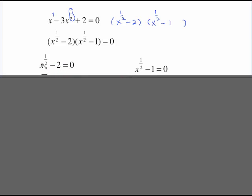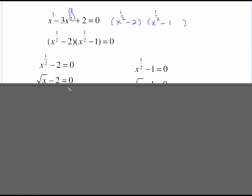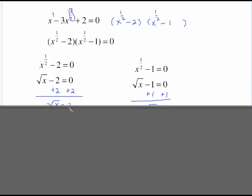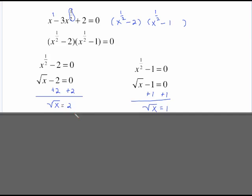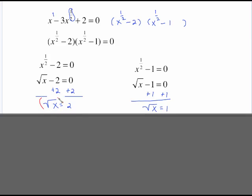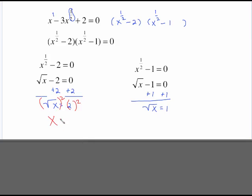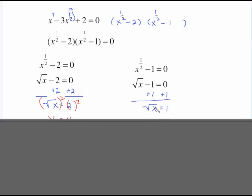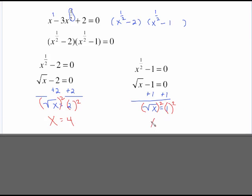I prefer to switch this rational exponent back to its radical form. X to the 1/2 converts to the square root of x, still minus 2 equals 0. I need to get this radical isolated, so I add 2 to both sides which gives me the square root of x equals 2. To undo the square root I square both sides, so x equals 4. Same set of steps: I added 1 to both sides giving square root of x equals 1. Squaring both sides gives x equals 1.